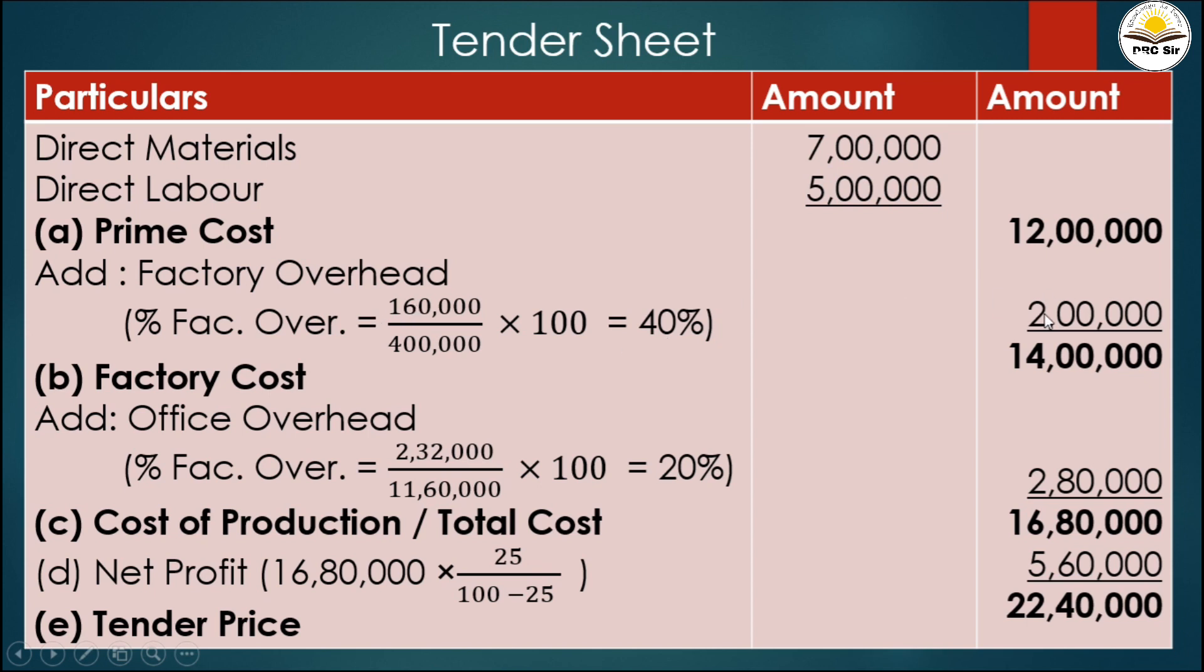In the tender sheet, direct labor is 5 lakh, so 40 percent of 5 lakh equals 2 lakhs. Factory overhead is 2 lakhs. Prime cost 12 lakhs plus factory overhead 2 lakhs equals 14 lakhs factory cost.